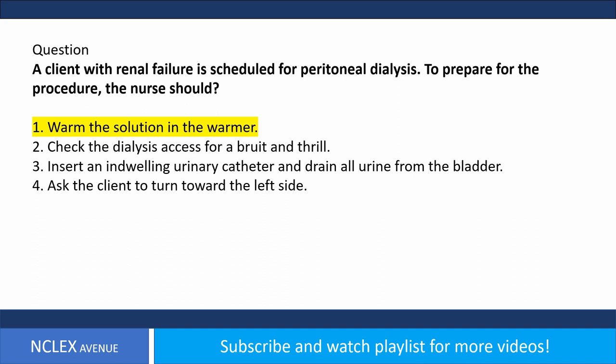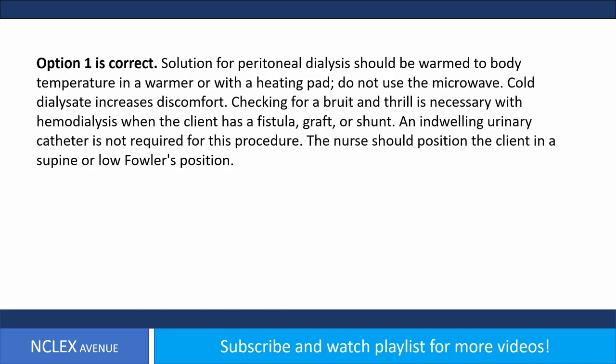Answer. Option 1 is correct. Solution for peritoneal dialysis should be warmed to body temperature in a warmer or with a heating pad — do not use the microwave. Cold dialysate increases discomfort. Checking for a bruit and thrill is necessary with hemodialysis when the client has a fistula, graft, or shunt. An indwelling urinary catheter is not required. The nurse should position the client in a supine or low Fowler's position.